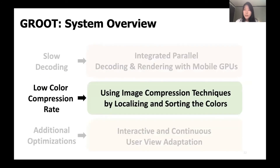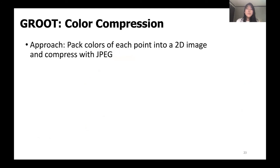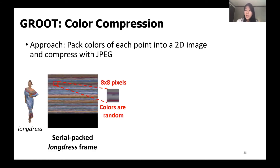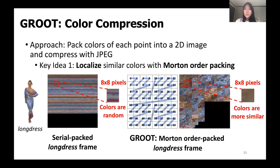Next, we present our novel color compression scheme. Since points are organized with the PDTree data structure, adjacent points in the encoded stream mostly have similar colors already. To remove the redundancy of this color information, we use conventional 2D image compression techniques like JPEG by packing the colors into a 2D image. A naive method packs colors in serial order, but since JPEG compresses data in blocks like 8x8 pixels, the colors within each block are quite random, which limits the compression rate and mixes colors. Instead, we use Morton ordering, which packs colors following a Z-shape order to maximize the locality of similar colors within the same compression block.